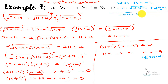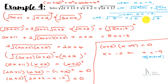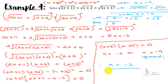When x = −2: left-hand side gives √(−4+11) + √(−2+2) = √7 + √0 = √7. Right-hand side: √(5(−2)+17) = √(−10+17) = √7. Since both sides equal √7, x = −2 is accepted. That's all for equations involving surds — see you in the next part.